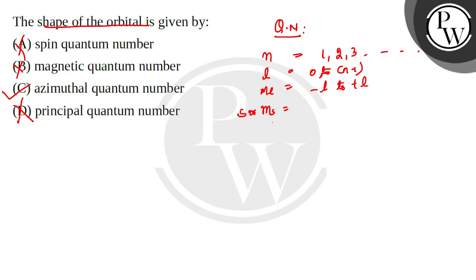And S or MS shows that the electron is rotating clockwise or anti-clockwise on its axis. So accordingly, your C option will be correct. The rest are incorrect. I hope you understood.